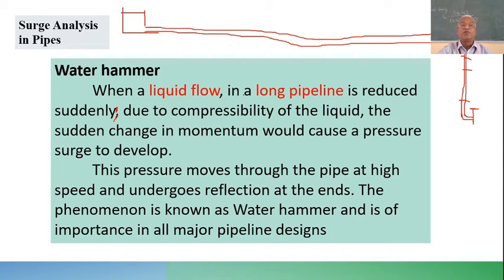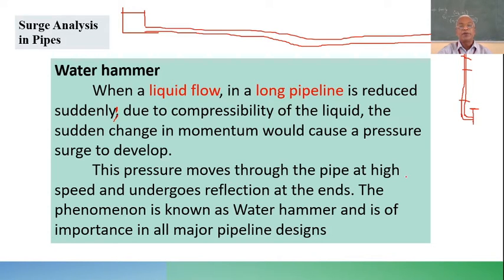It depends on the size of the pipe, the speed of the water, and the pipe length. If the size is large, velocity is large, and you close it suddenly, there is a possibility the pipe will burst. If you close the valve very slowly there may not be any increase in pressure, but if you close it suddenly there will be a jerk — that is water hammer. The sudden change in momentum causes a pressure surge to develop.